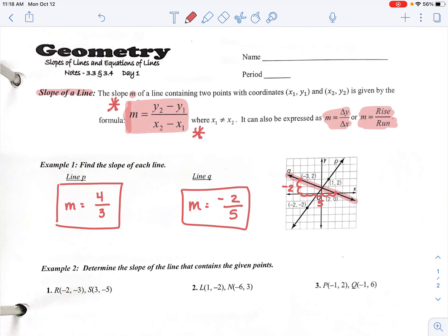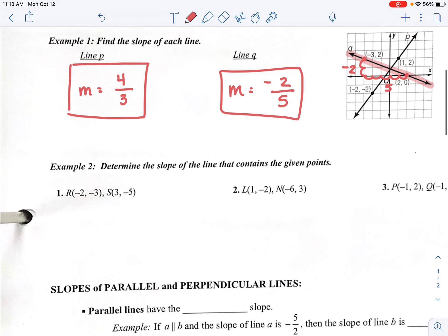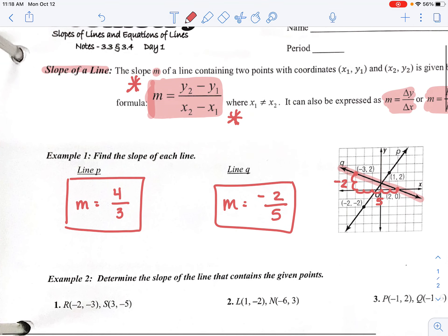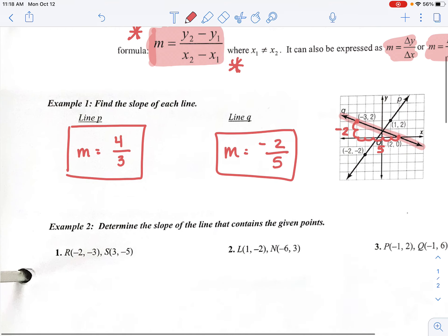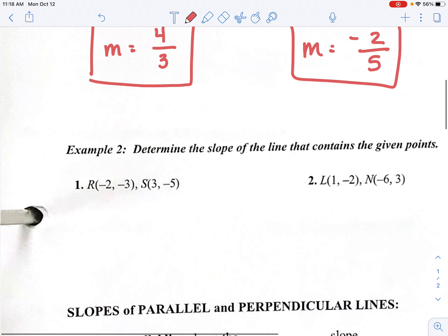So that's how you do it graphically. You can always use that. You can always grab graph paper and plot those points. We're going to practice with actually using the equation as well. So the equation we're going to use is that y2 minus y1 over x2 minus x1. So our first coordinates here are negative 2, negative 3, and 3, negative 5.